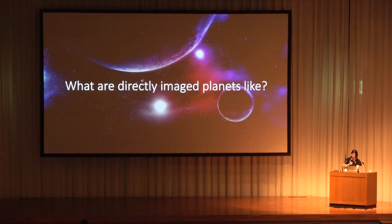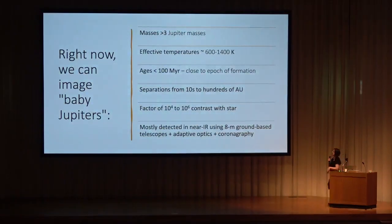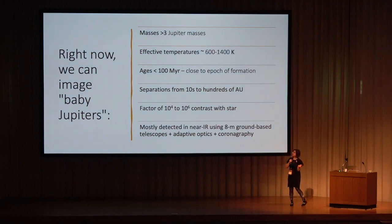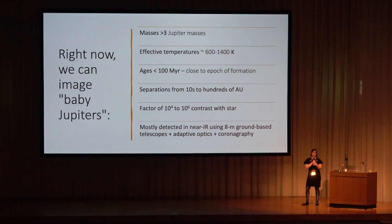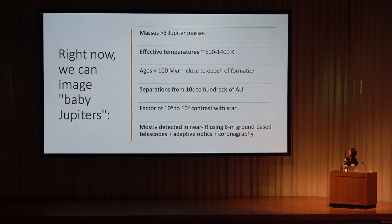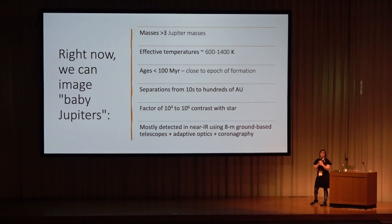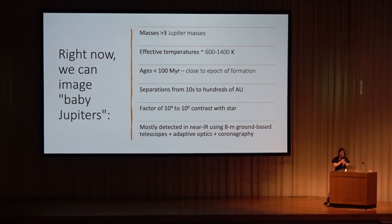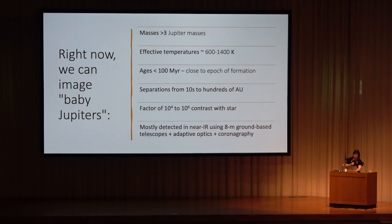We have a cohort of a couple dozen directly-imaged planets. These are often called baby Jupiters, though they're more like baby super-Jupiters: masses of three Jupiter masses or greater, effective temperatures of 600–1400 K, ages under 100 Myr, located 10–100 AU from their star, and typically 10⁴ to 10⁶ times fainter than their host star. Most detections have been in the near-infrared using 8-meter ground-based telescopes with adaptive optics, coronagraphy, and post-processing.